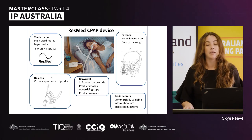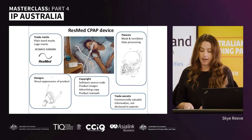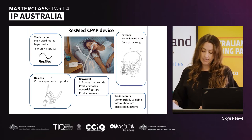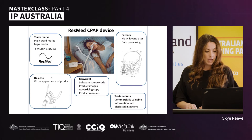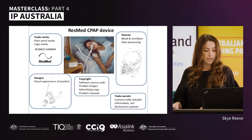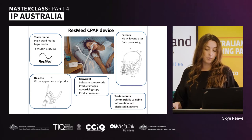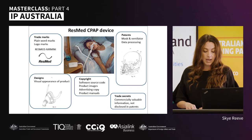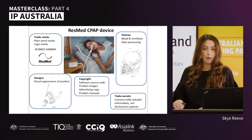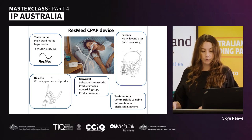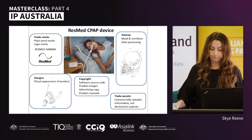This slide shows how a company can leverage various types of IP to protect their brand, products, and business processes using the full scope of IP mechanisms. In this example they've registered their trademark for both a plain word 'ResMed' and a logo mark, registered the design for the visual appearance of the product, and have a registered patent. Copyright protects software source code, product images, advertising copy, and product manuals, while trade secrets protect commercially valuable information not disclosed in patents.